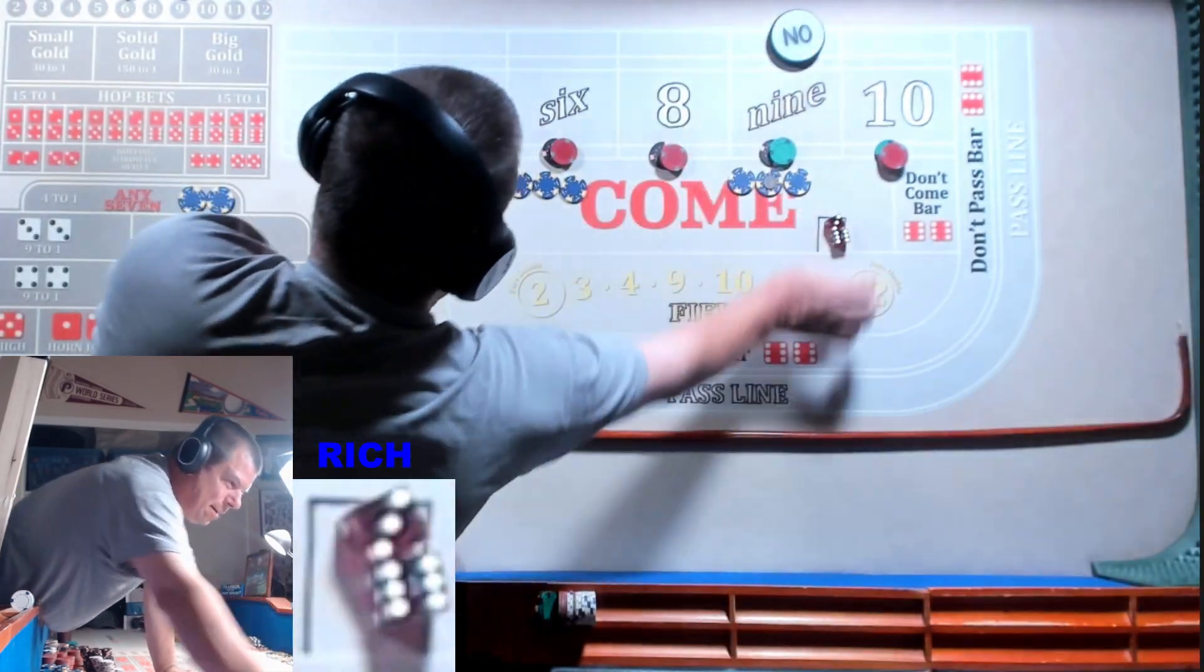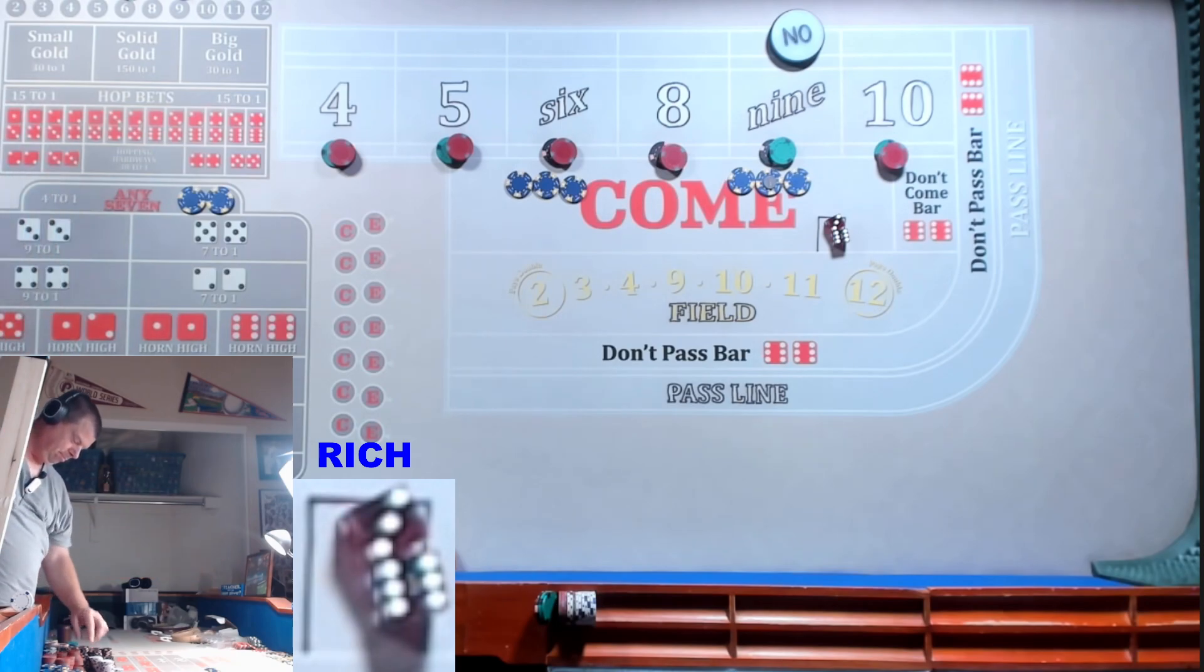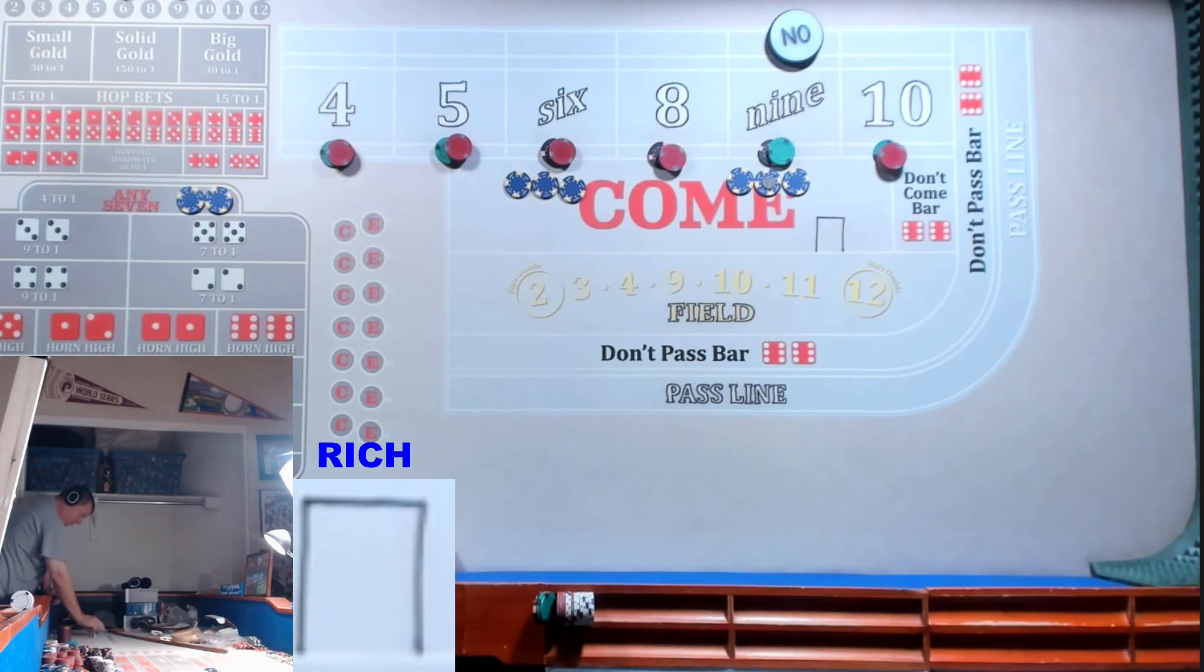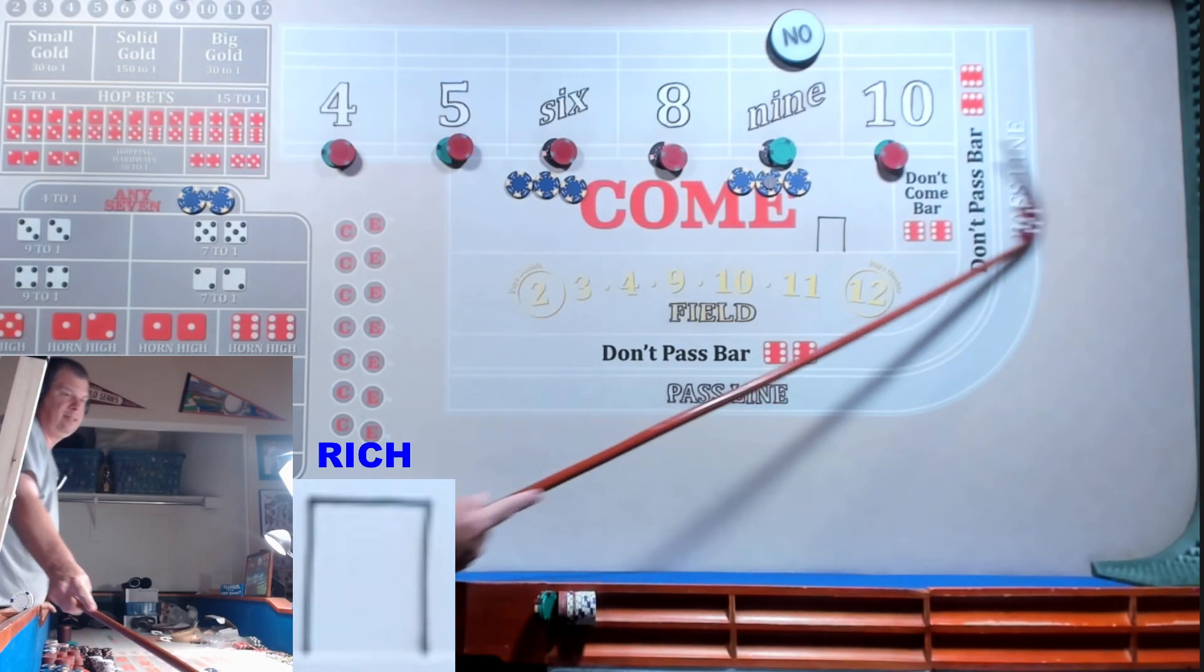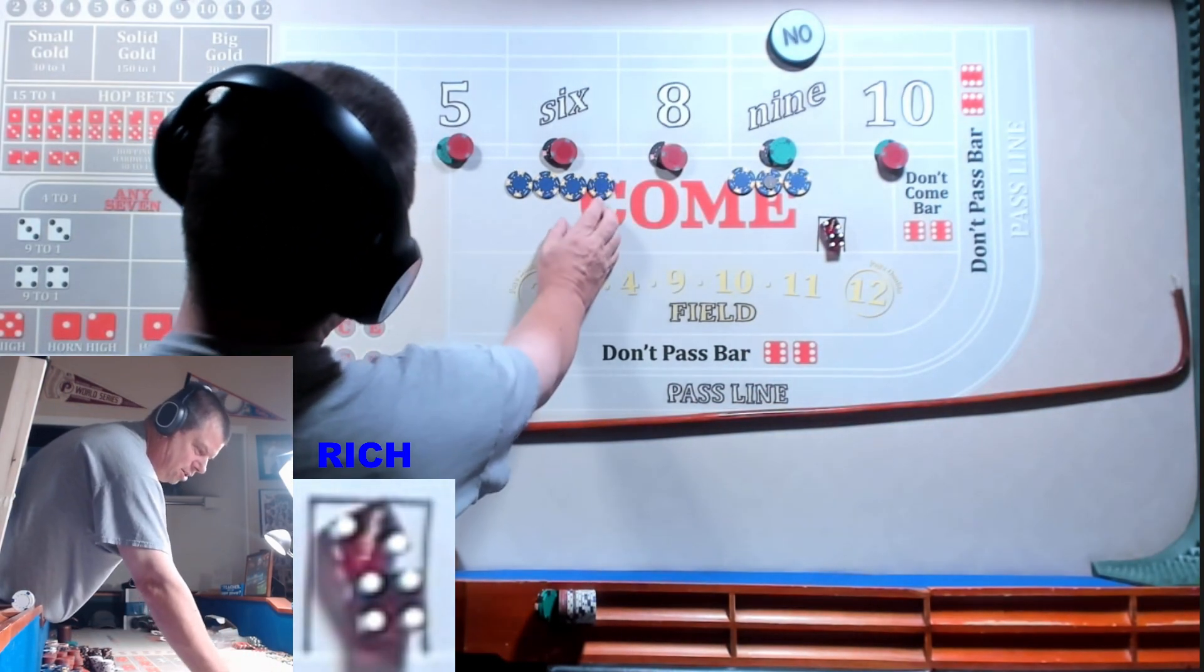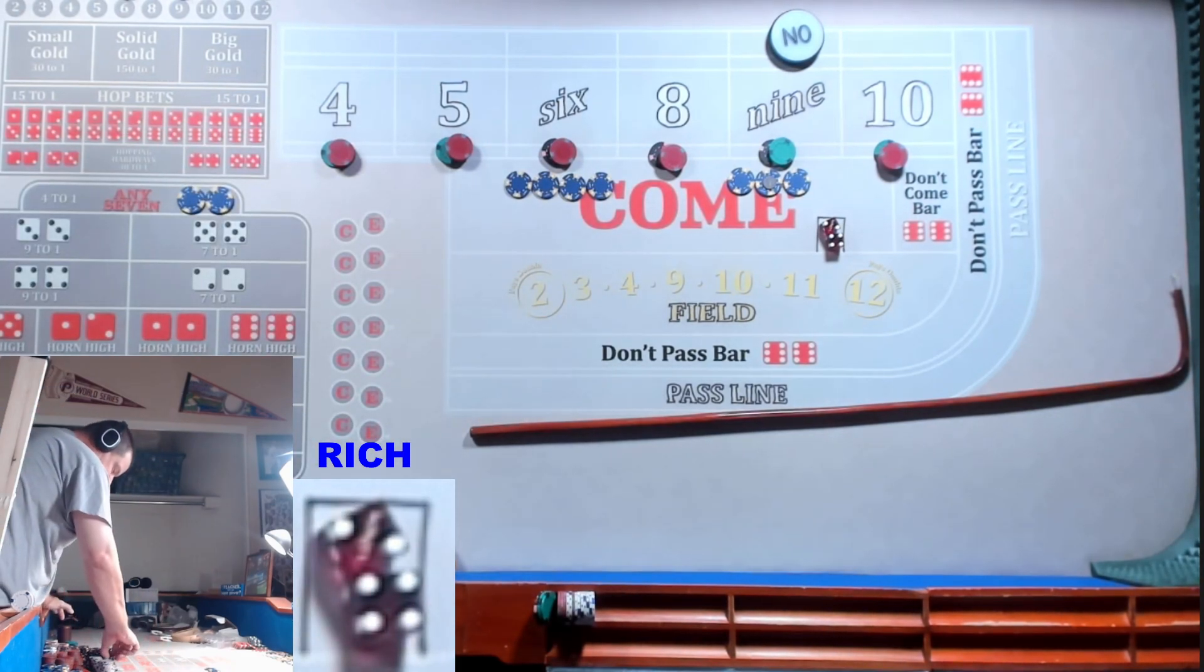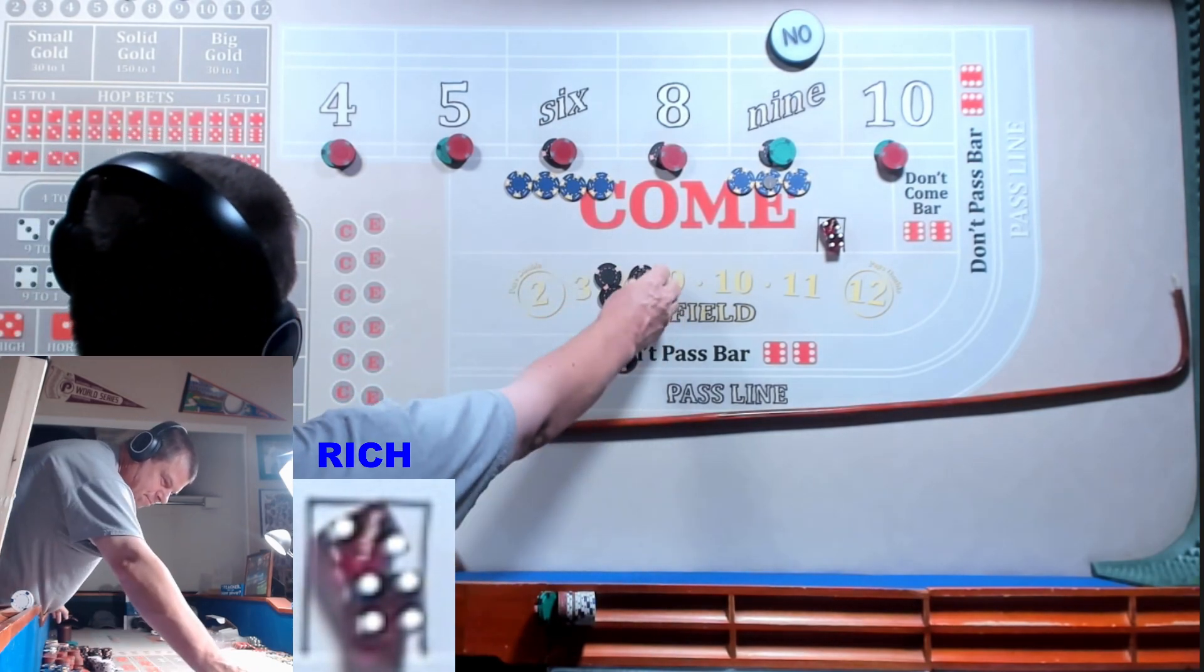We got a 7 on the come out. Any bets? Nope, let's just be off and we'll try it again. We got a 9. Mark it. Come out roll. We got a point Rich, any bets? Nope, we're good to go. Let's keep her going, sixes and nines.